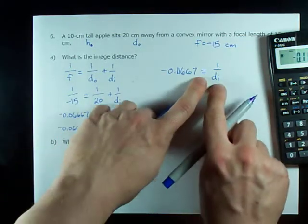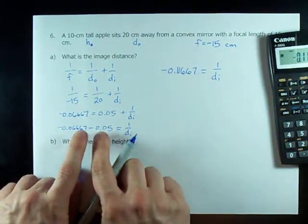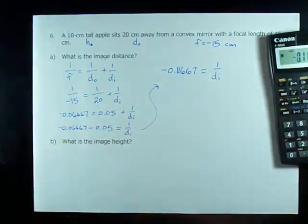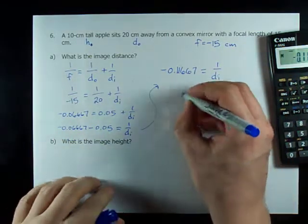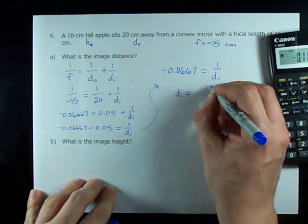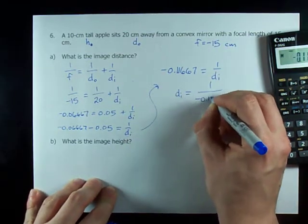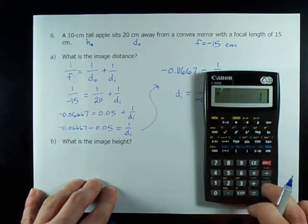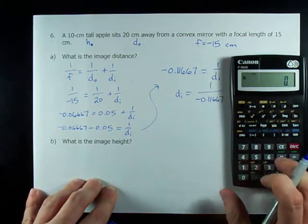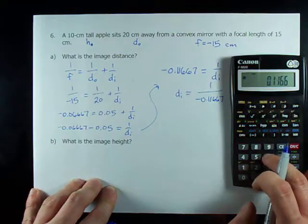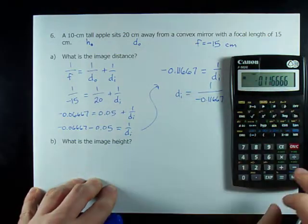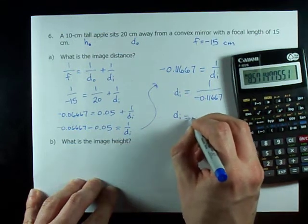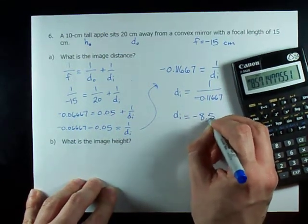Notice I kept the right hand side the same because all I was doing was filling in these numbers. I ran out of space so I continued it up here. And to solve for d_i, all I have to do is 1 over that other number. 1 divided by 0.11666, that gives me a d_i of negative 8.57.